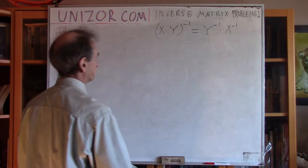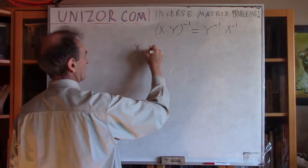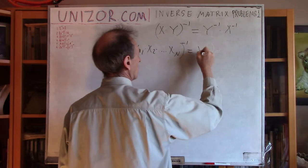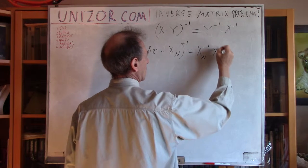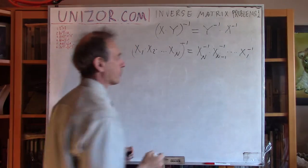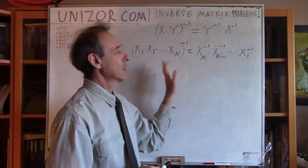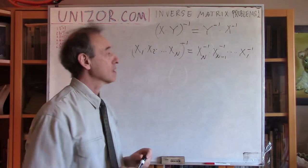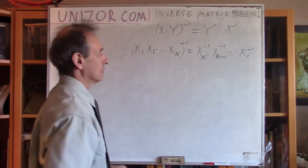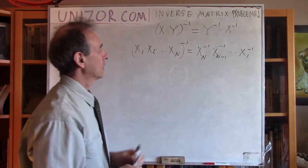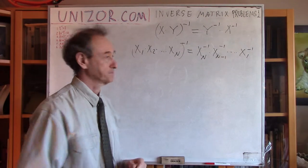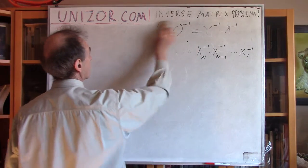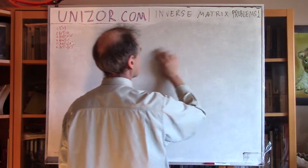This can be very easily expanded by induction to a product of n matrices. Assuming each matrix has the same dimension — an n×n square matrix — and each matrix is invertible, then to invert the product you invert each component and multiply the results in the reverse order. The proof by induction is absolutely trivial, so I suggest you do this small exercise yourself — it will take maybe a couple of minutes.